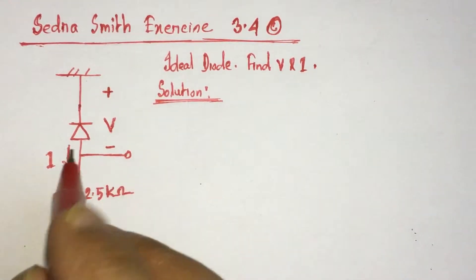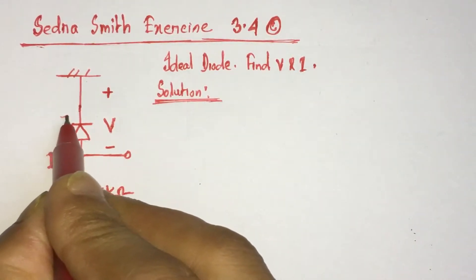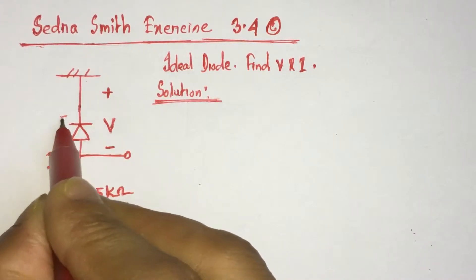From the circuit, we see that this is the negative polarity of the diode, and this is the positive polarity of the diode.